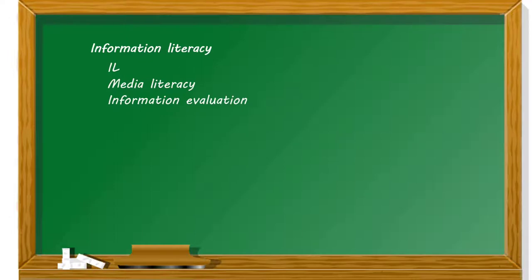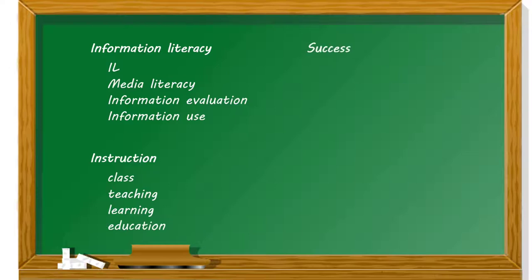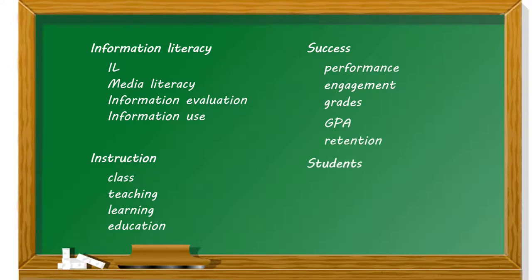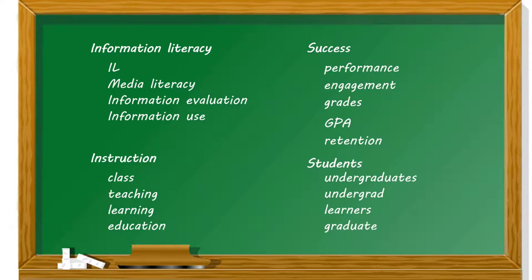Here's an example using the first research question. Alternative terms for information literacy might include the abbreviation IL, media literacy, information evaluation, or information use. Alternative terms for instruction might include class, teaching, learning, or education. Alternative terms for success might include performance, engagement, grades, GPA, or retention. And alternative terms for students might include undergraduates, undergrad, learners, or graduate. For any of these terms, I certainly could have created longer lists, which would have increased the results of my searches.